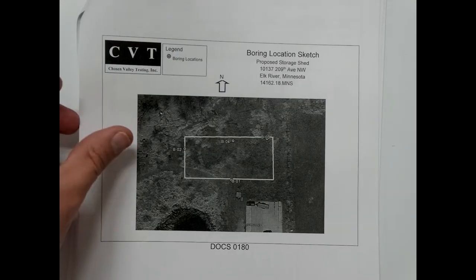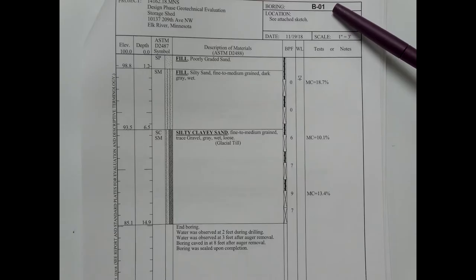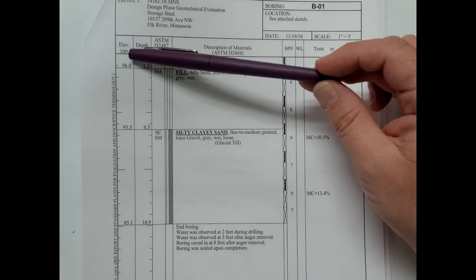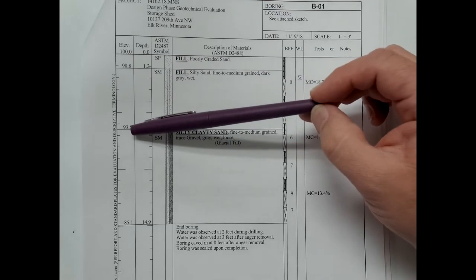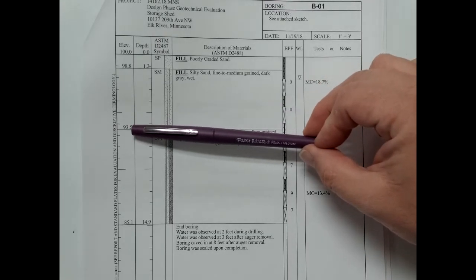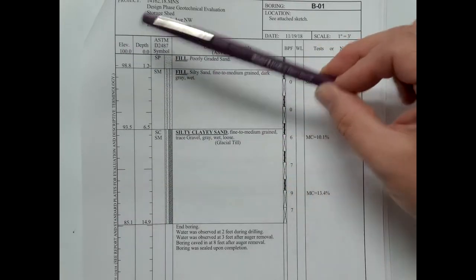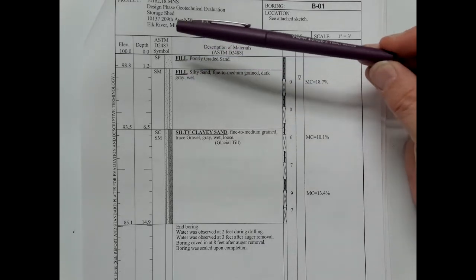We get a standard borehole log, and there are always variations in them. There are several pieces of information: this is boring number one. The existing ground is assigned an elevation of 100. One foot two, or 98.8, is 1.2 feet below the surface; 93.5 is 6.5 feet below; and 85.1 is 14.9 feet below the surface. This gives you elevation and depth. At each point, as you encounter each type of soil, the soil is identified using the unified soil classification system.